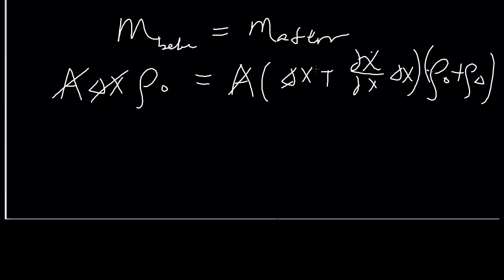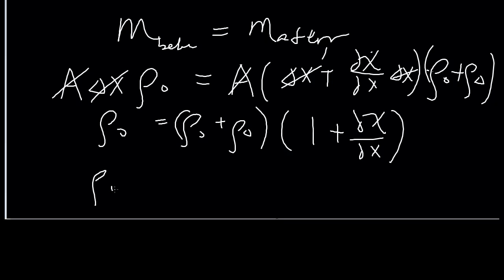Canceling A and delta x from both sides, we end up with rho_0 is equal to rho_0 plus rho_delta times 1 plus d_chi/dx. Then, as we expand, we'll get rho_0 is equal to rho_0 plus rho_0 d_chi/dx plus rho_delta plus rho_delta d_chi/dx.